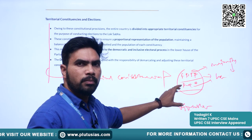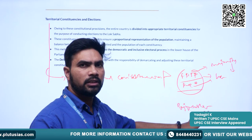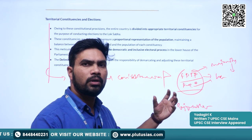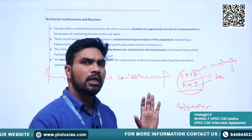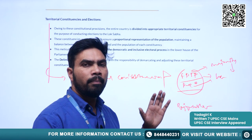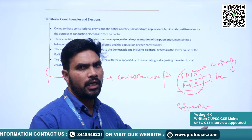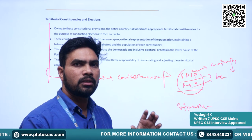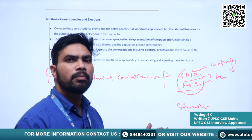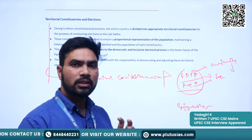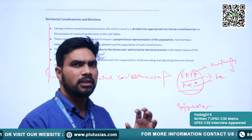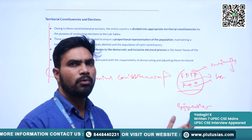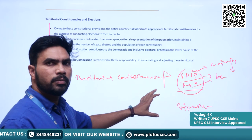There are reasons for adopting the First Past the Post system for Lok Sabha elections. When we discuss the mains lectures, we will go into more detail about the differences between these two systems and why India opted for FPTP for direct elections. There are several reasons including historical reasons — during the 1950s, the majority of people were illiterate and not capable of understanding the complexities involved in the proportional representation system.